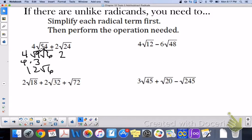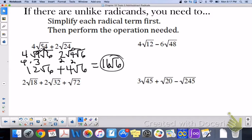We have 2 times 24 goes down to 4 times 6. So root 4 and root 6. Root 4 is 2. 2 times 2 is 4 root 6. Now we can combine them. 12 plus 4 is 16 root 6.